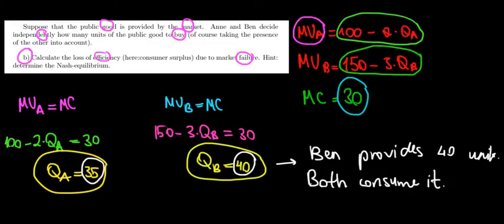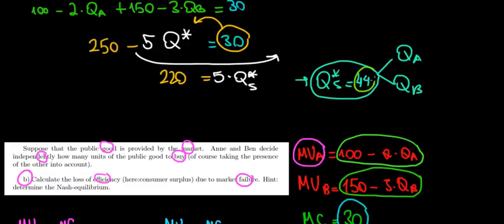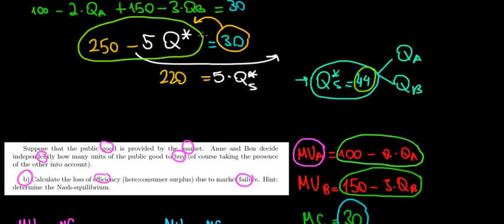Is there any loss in efficiency? Since there are 40 units of the public good on the market, but under the social optimal level there should be 44 units, there is under-provision — less than socially efficient. The loss in efficiency must account for the entire societal demand, which is 250 minus 5 times the quantity — the combination of both consumers' marginal utilities.